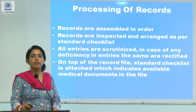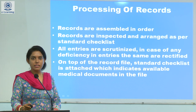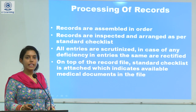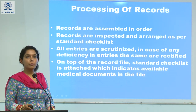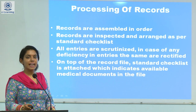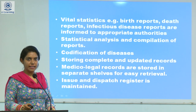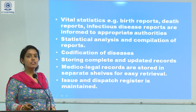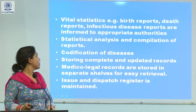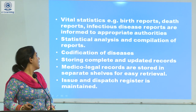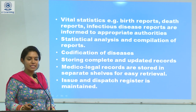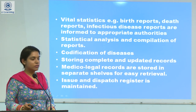After the responsibilities of the MRD, we will discuss the processing of records. Records are assembled in order, then inspected according to a standard checklist, all entries are scrutinized and rectified. On the top of the record file, we have a standard checklist indicating all data present. Vital statistics — that is birth rate, death rate — are informed to the appropriate authorities. Statistical analysis is done, followed by codification of disease and storing of the complete updated records.